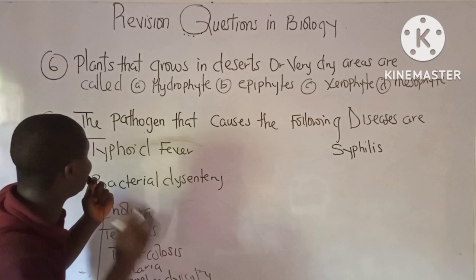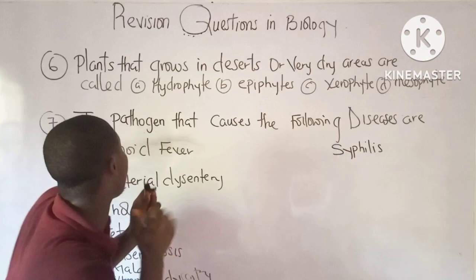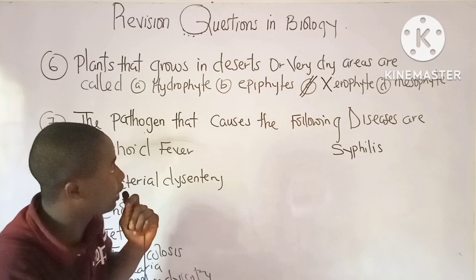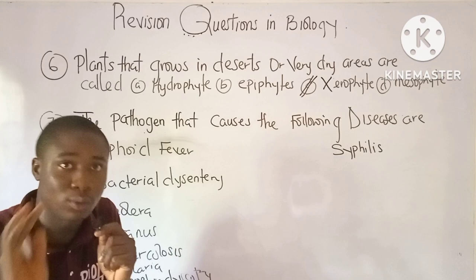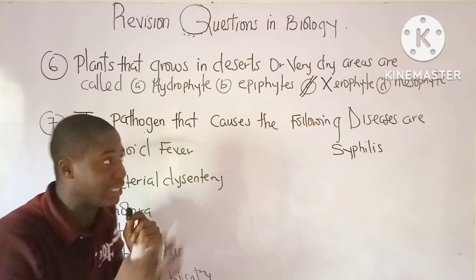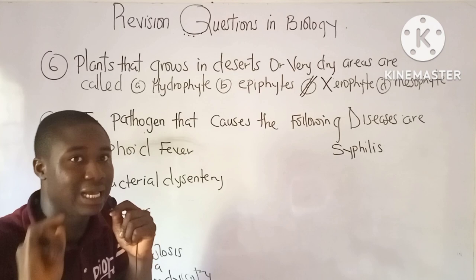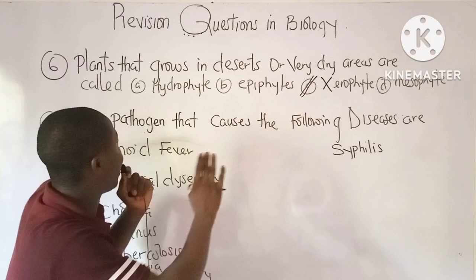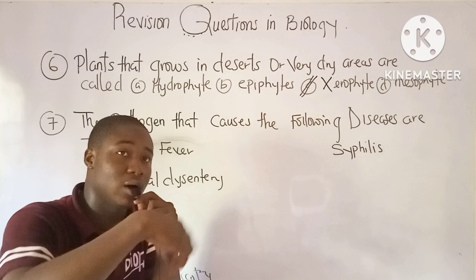Question 6: Plants that grow in deserts or very dry areas are called xerophytes. Examples include cactus (Opuntia) and aloe vera. Epiphytes are plants that grow on top of another plant, such as ferns. Hydrophytes live where there is a sufficient supply of water, while mesophytes have an adequate water supply — a good example is the yam.